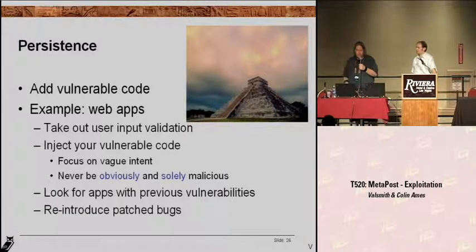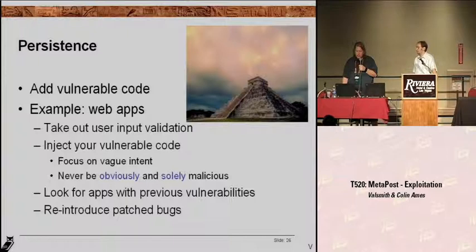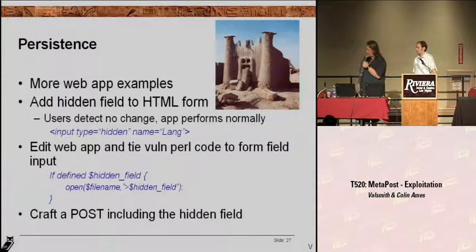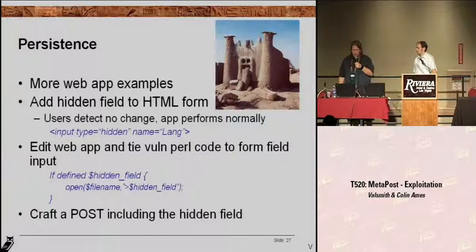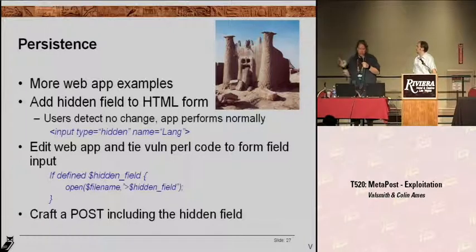His VNC is going to work normally, but you're also going to have an exploit that you know will work every time, and you haven't added any rootkits or backdoors. Another really sneaky thing we like to do is add vulnerable code to applications. This works really well in web apps because the code's sitting there for you to modify. Do things like take out user input validation — a lot of web applications have forms that people fill in; we'll go in there and take out the security checks so you can exploit them later. The focus here is on vague intent: never be solely malicious, never have your actions only have one outcome. Reintroduce patched bugs.